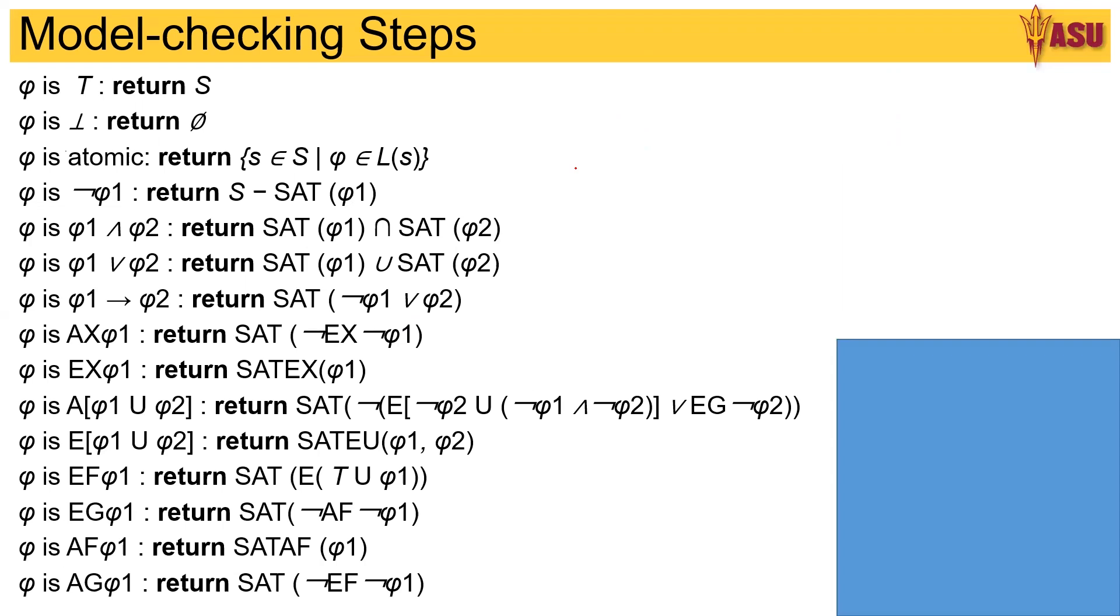There does not exist at least one path which does not have the formula φ1. So you are writing A in terms of ¬E. You have AX φ is equal to ¬EX ¬φ.